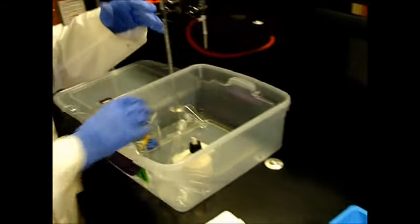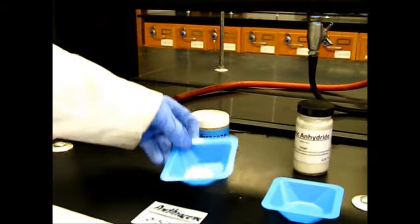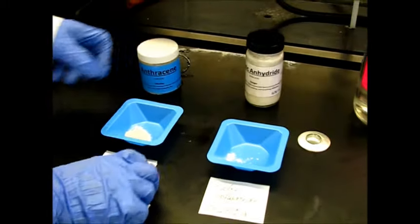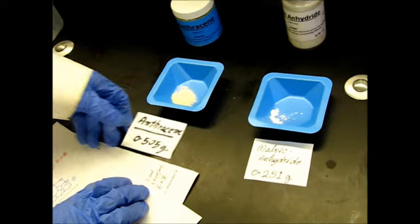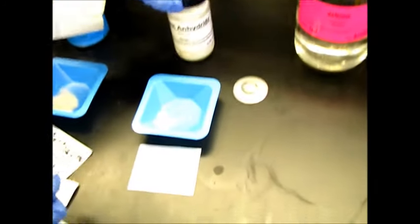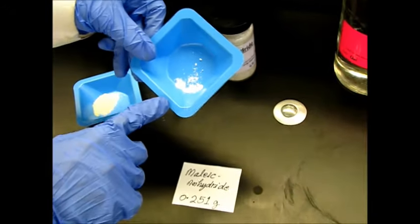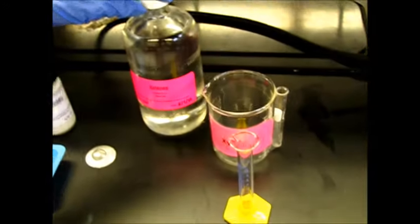So these are the two reasons. And here is our glass apparatus. And here we have our anthracene. Anthracene is slightly yellow in color. And we have already weighed around 0.505 gram. And here is the maleic anhydride, which is white color powder. Here you can see this one. We have weighed around 0.251. And this is the xylene.